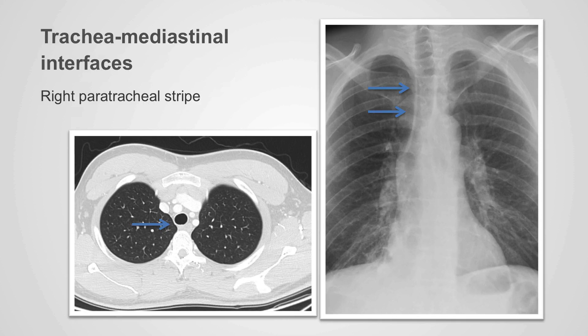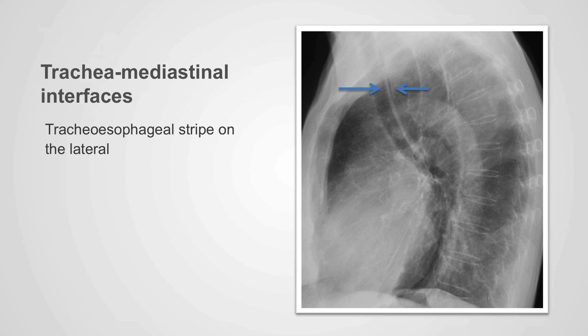The trachea and the air within the trachea can also create an interface within the mediastinum. The most important interface is the right paratracheal stripe, which represents the soft tissues in the paratracheal region with the tracheal airway column on one side and the lung on the other, and this should be no greater than five millimeters in diameter. Occasionally, the trachea will form an interface with the mediastinal structures on the lateral x-ray posteriorly, called the tracheoesophageal stripe, which is the interface between the trachea and the esophageal wall and should be no greater than 5.5 millimeters in thickness.